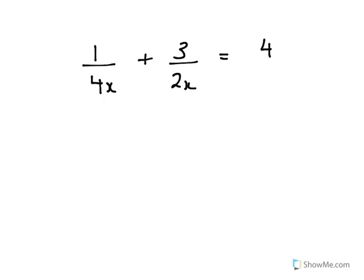We have 1 over 4x plus 3 over 2x equals 4. We can't add the fractions until we get them in the same form, so we can change 3 over 2x into the form 6 over 4x.